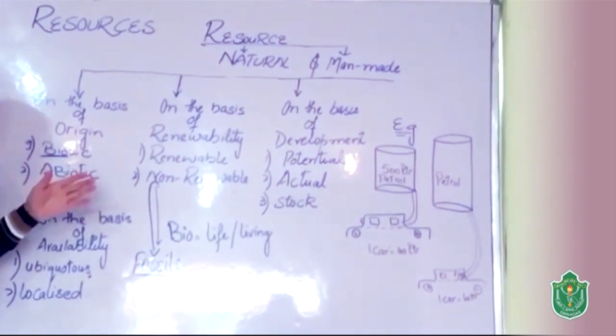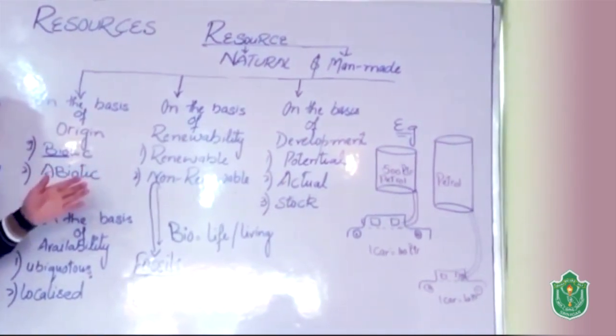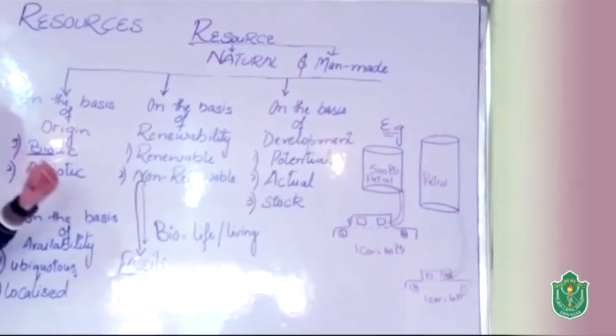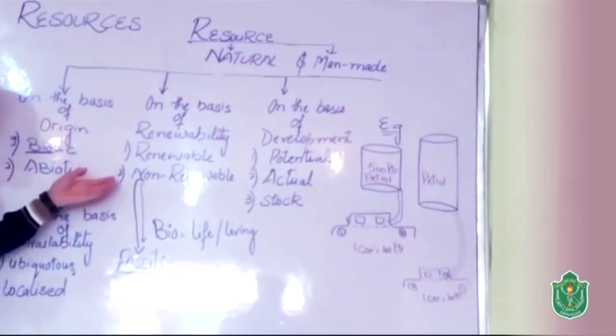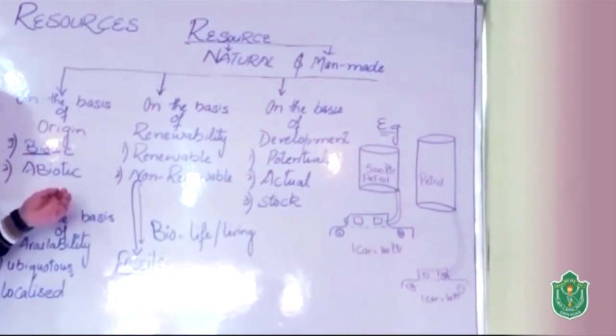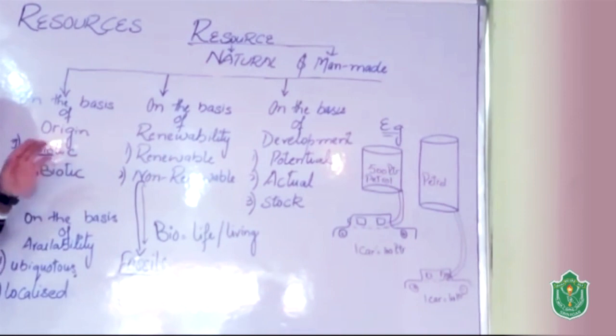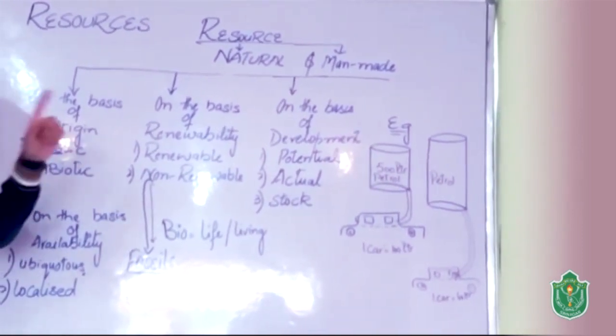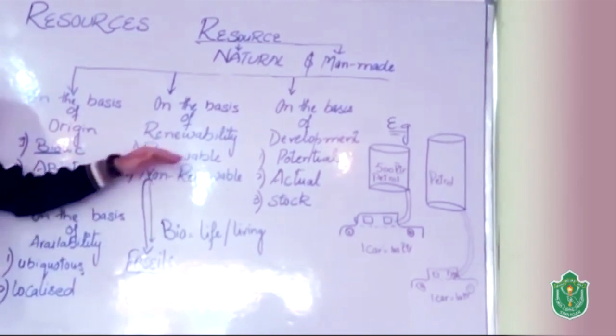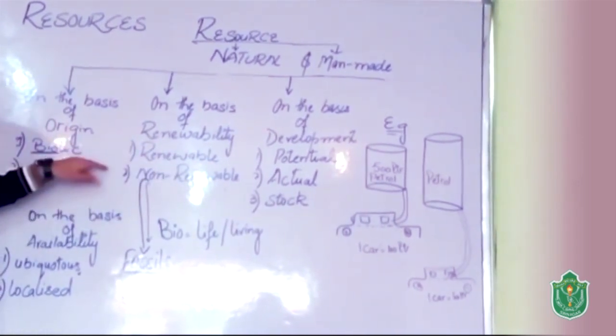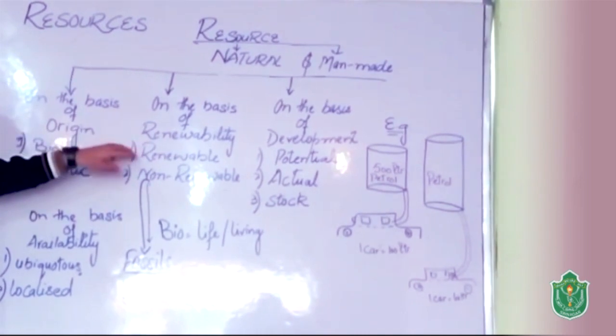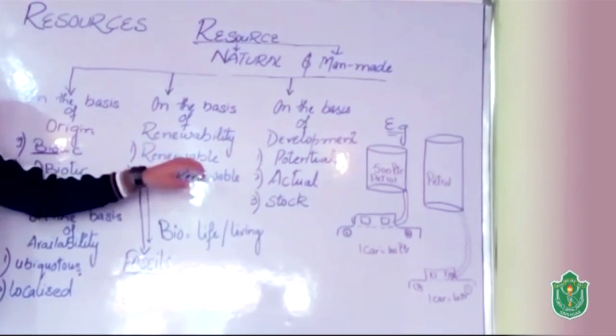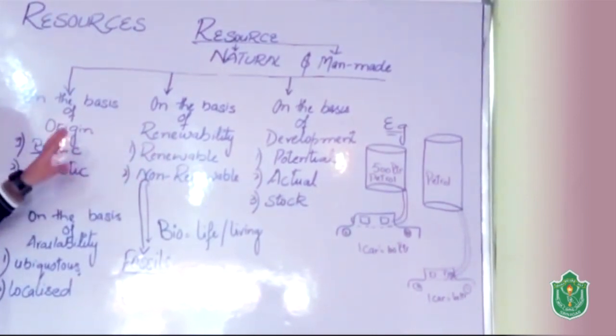Non-renewable sources are those sources of energy which we cannot use again and again. Here is the question: Sir, are we using non-renewable sources today? Can we use it tomorrow? Yes, but we cannot use it after 50 years or after 100 years. There is no particular time period for non-renewable resources. Renewable resources can also be called inexhaustible and non-renewable resources can also be called exhaustible.